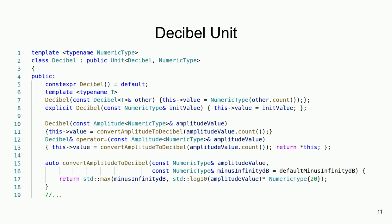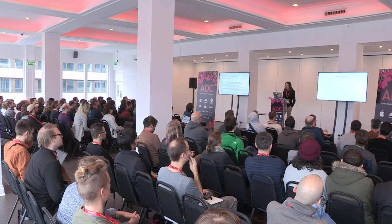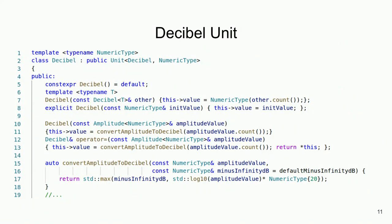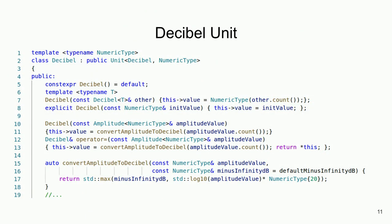Inside the library there are specializations for decibels, amplitude, resonance, and Q. Let's look at an example — a version of a decibel unit. It has a few different constructors: one for copying other decibels, and another that lets you make decibels from normal included C++ types like int and float. It's declared explicit, so you can't implicitly assign to a decibel — you have to explicitly say this is a decibel of whatever type. It also defines a conversion from amplitude to decibel, and the amplitude class defines the reverse conversion.